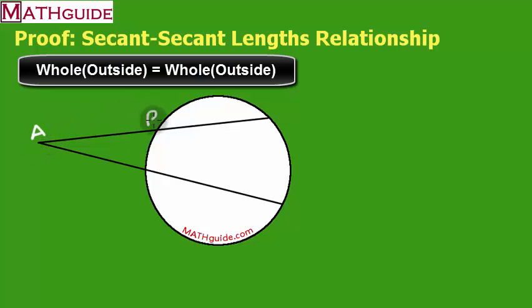So I'm going to say that this is point A. This is point B, where the circle and the secant line meet. Likewise, over here, this is going to be point C, where the secant line meets the circle. This is going to be point D, and this is going to be point E.